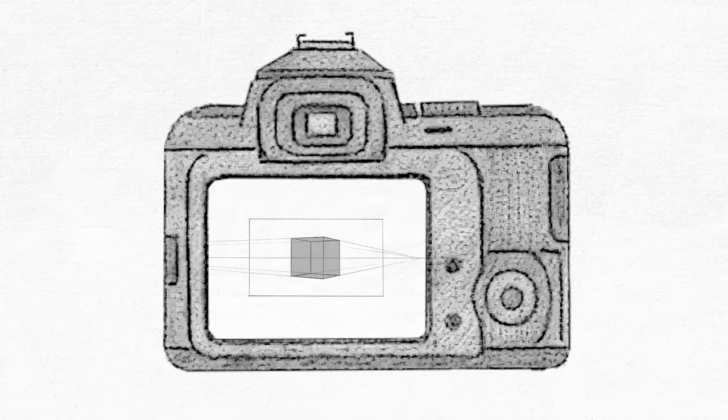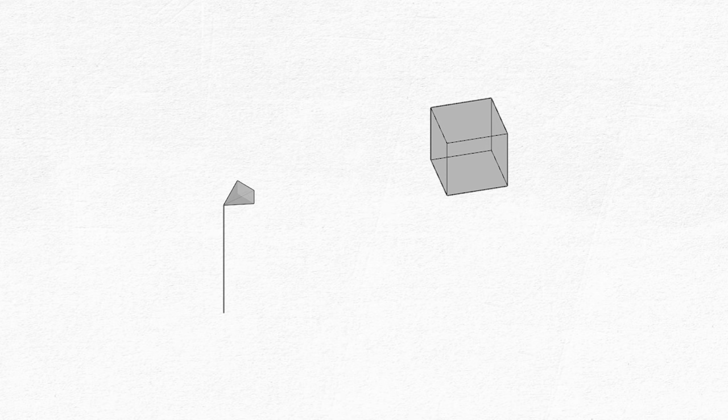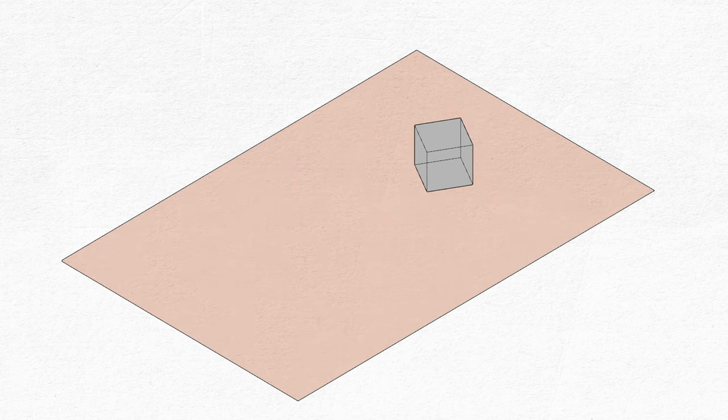We also need a camera to see the box and our drawing will be the image which that camera captures. I'm going to attempt to animate this so I'm swapping out my detailed drawing of a camera for a more simplified version. I need to decide where to place this camera but before I do that I'm going to add in a ground plane.